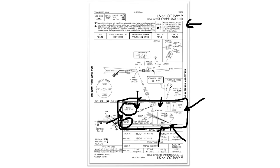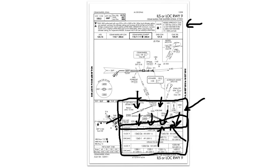Next, we'll look at the minima section. The minima section is located at the bottom of the chart and is broken down into aircraft category and type of approach — straight in, circling, and in this case there are alternate minimums depending on whether or not you can fix the AWPA intersection, so those are listed in a separate section.